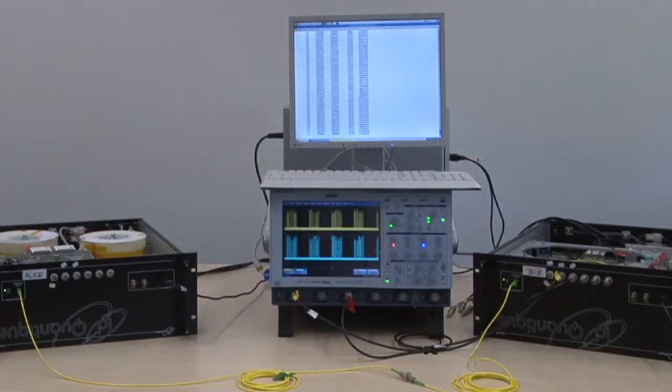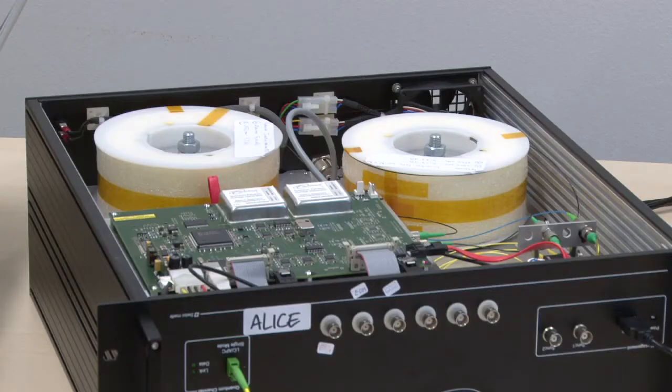On the left side, you see the Alice module. On the right side, you see the Bob module. And they're exchanging secret keys. This is how the Alice module looks from the inside.